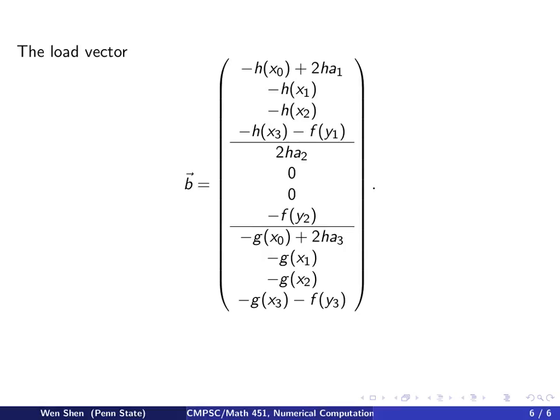So here is how the load vector b looks like. The terms coming from the Neumann boundary condition are the ones that I circle, and the rest come from the Dirichlet boundary condition. So if n shall be bigger, you form the A matrix and the B vector in a completely similar way. So hopefully the pattern is clear.